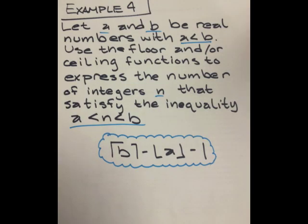Finally, example number four: let a and b be real numbers with a less than b. Use the floor and/or ceiling functions to express the number of integers n that satisfy the inequality a is less than n, which is less than b. The answer to this is the ceiling of b minus the floor of a minus 1.